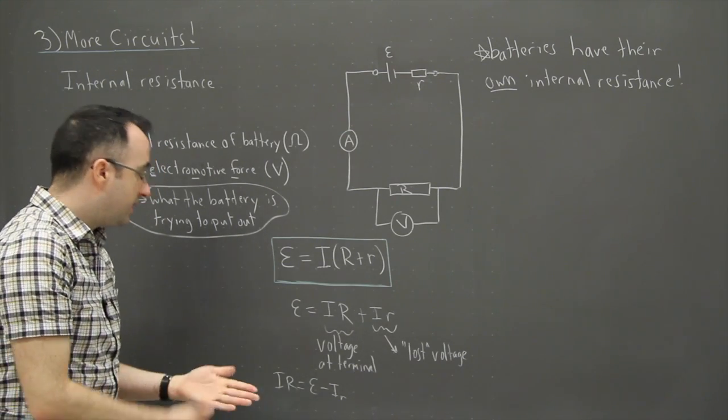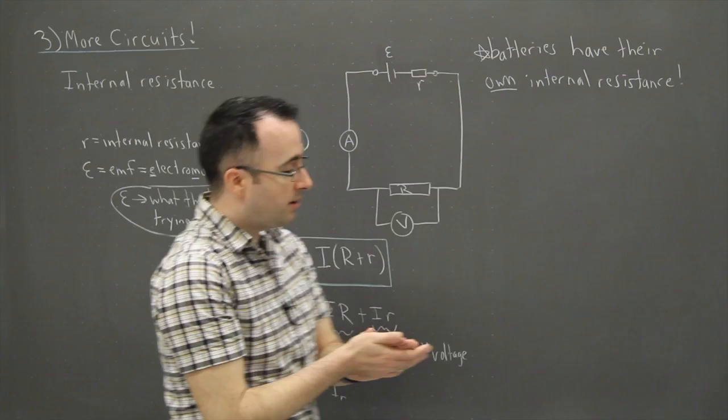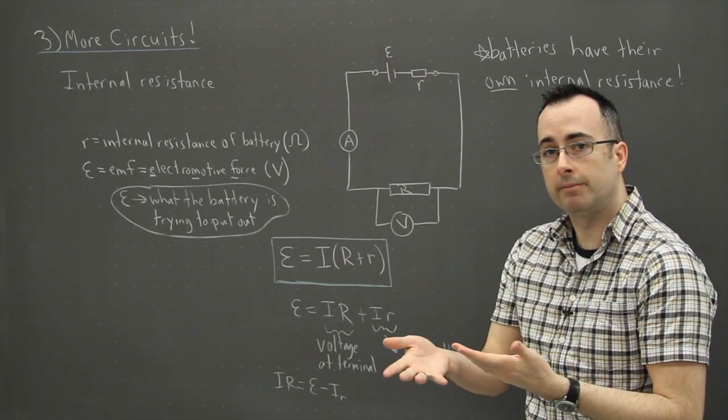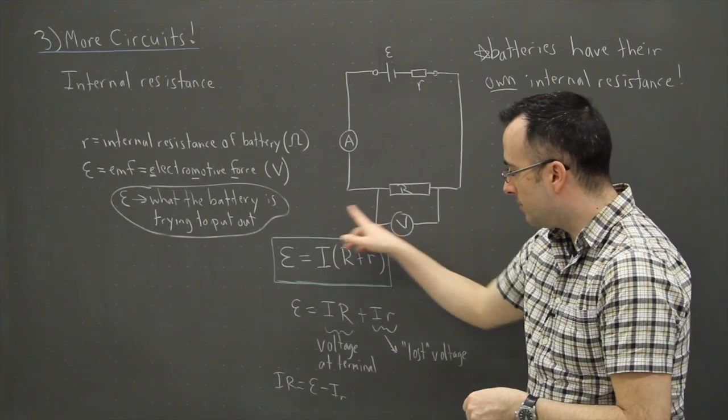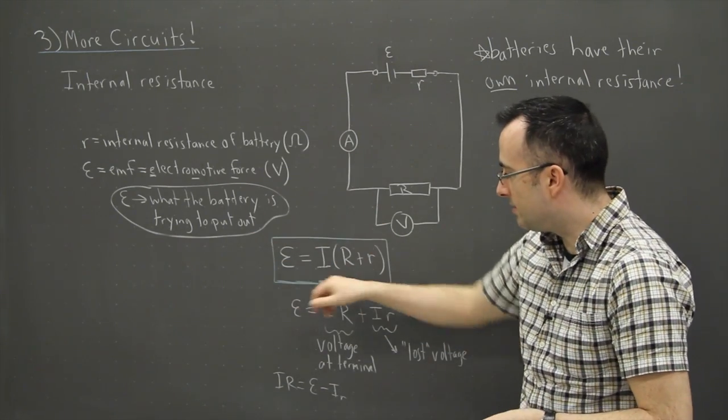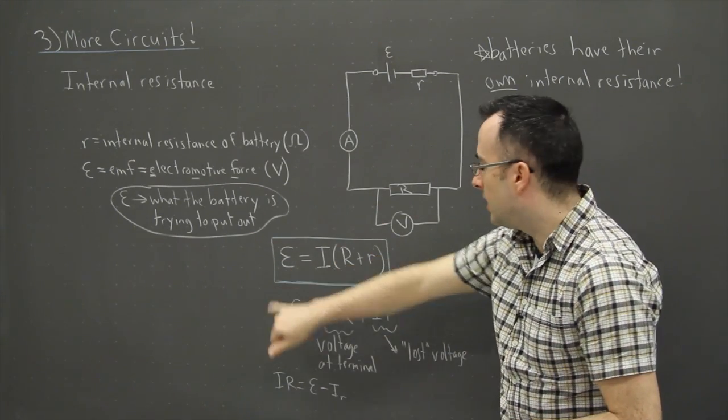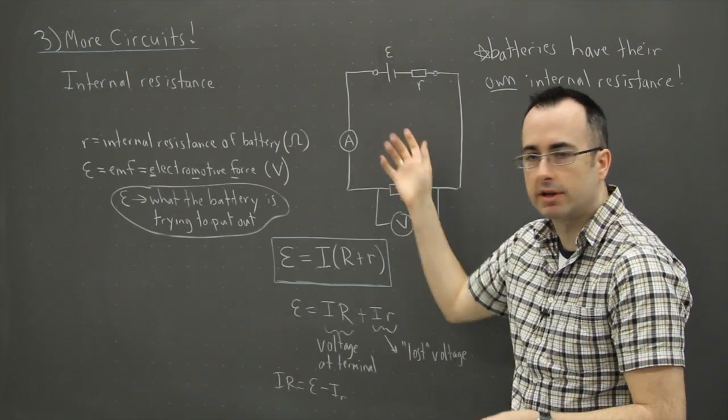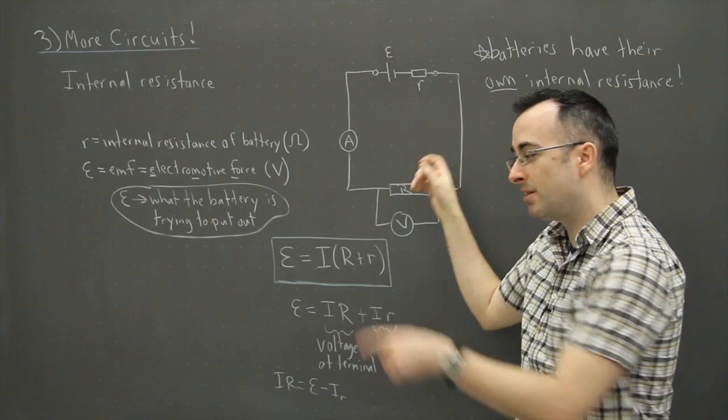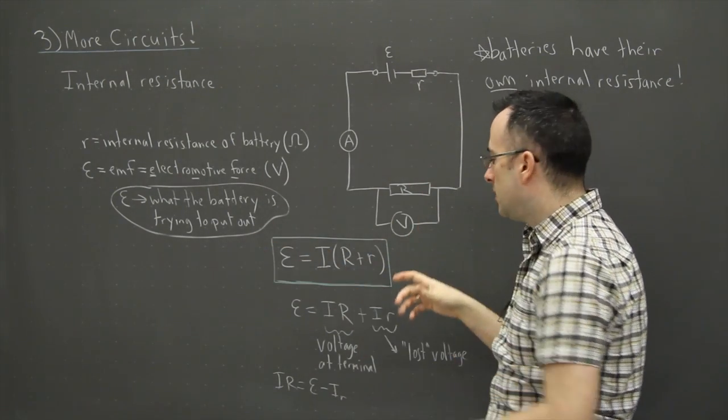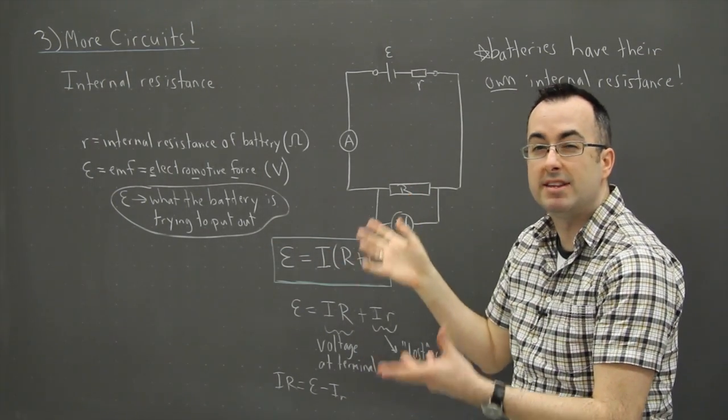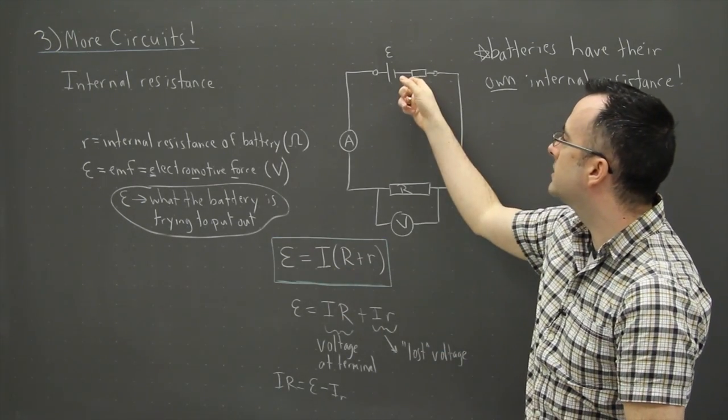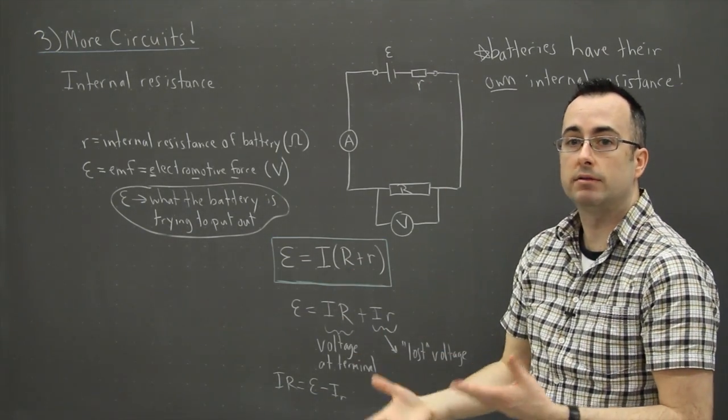The key thing here though is that real batteries have their own internal resistance, so you have to take that into account when you're calculating. Just look at what the battery is trying to do, and this is the current everywhere. This is the resistance of the rest of the circuit. It doesn't just have to be one resistor, it could be a big complicated thing, but we would just rewrite a resistance value that's equivalent to that. And little r is just the resistance of the battery, inside the battery.